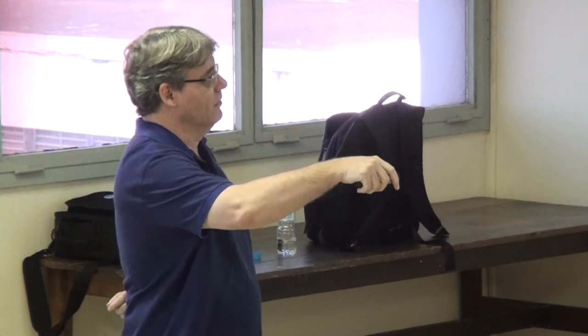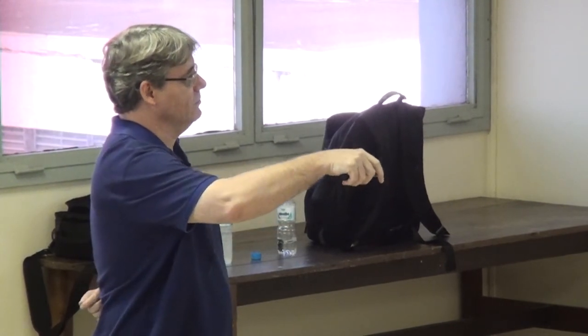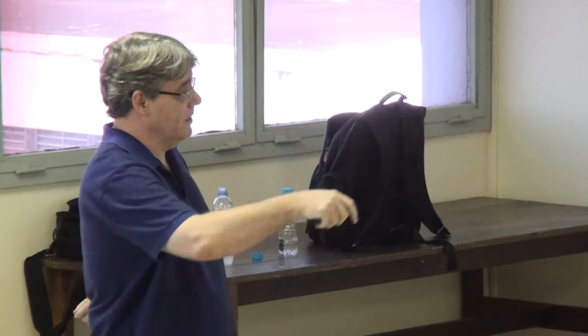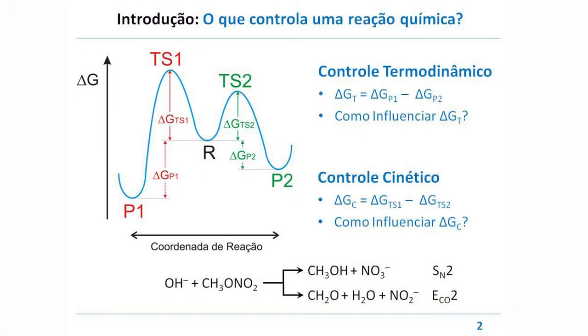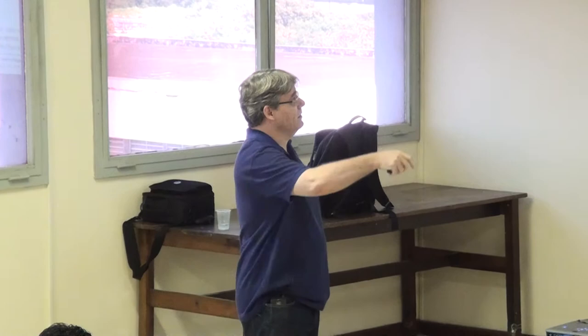Aqui tem uma reação desse tipo, em que a gente parte do mesmo reagente e podemos obter dois produtos — pode ser uma reação SN2 ou uma reação de eliminação seguida de dissociação. Vamos voltar a essa reação em breve. A teoria básica que aprendemos para determinar o que influencia uma reação química, em particular quando ela é controlada cineticamente, é a teoria de estado de transição.